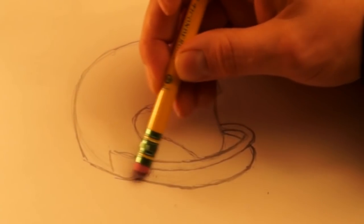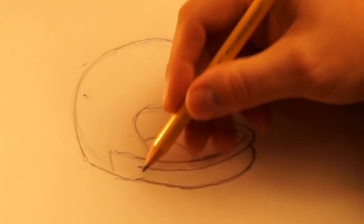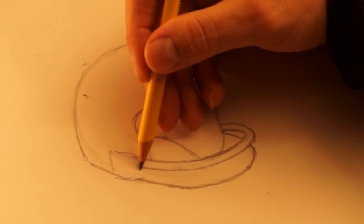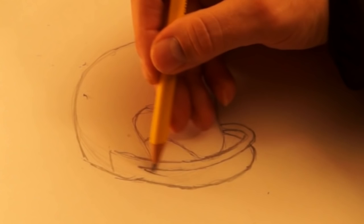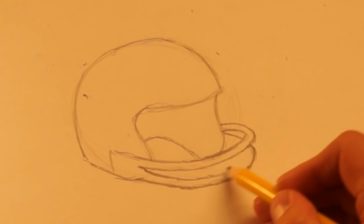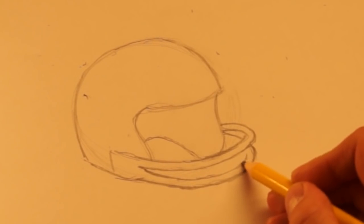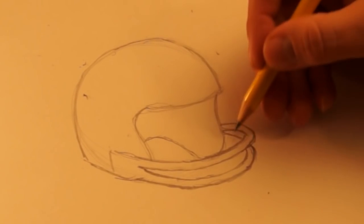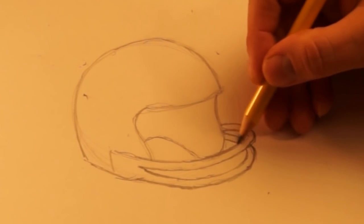I'm going to come back here and erase where this overlaps the lower part of the helmet. Start right about here. Curve around. And then go back behind here like that.